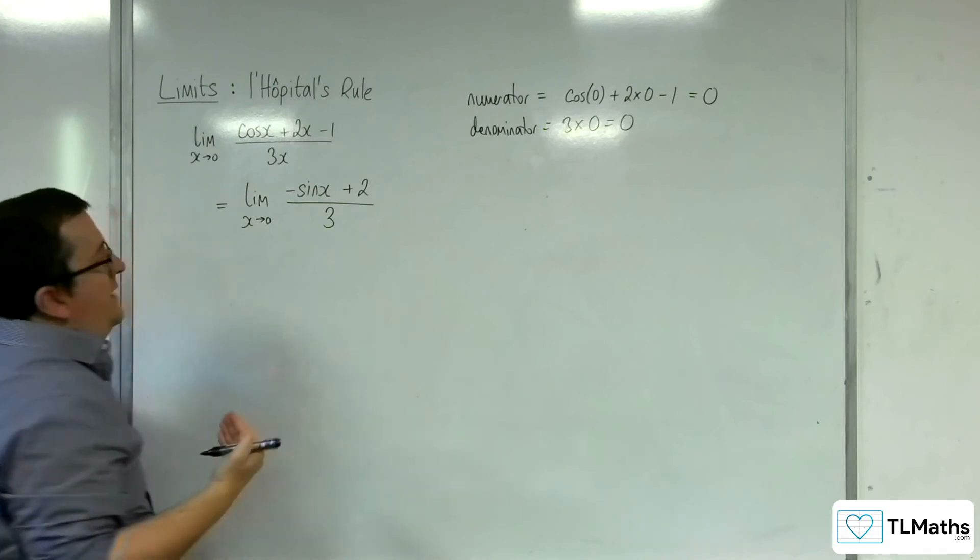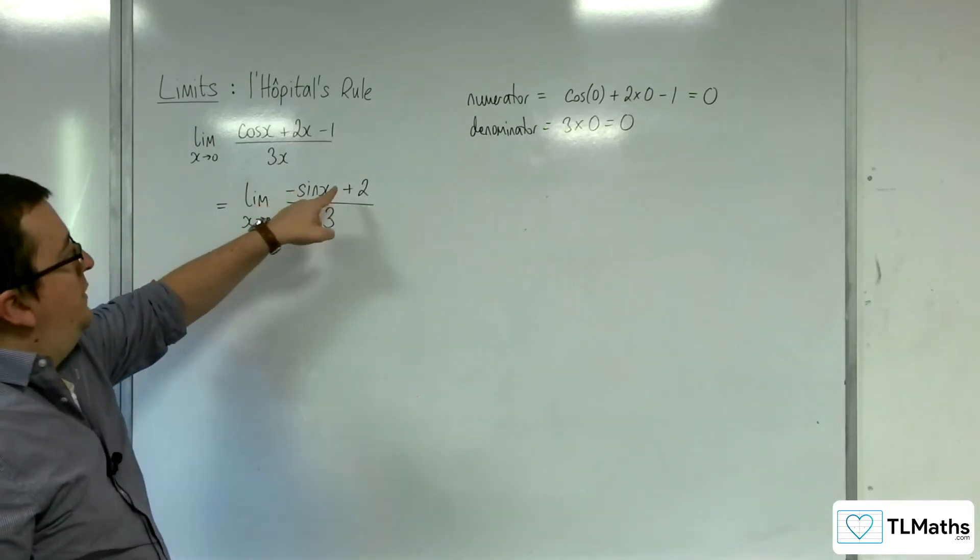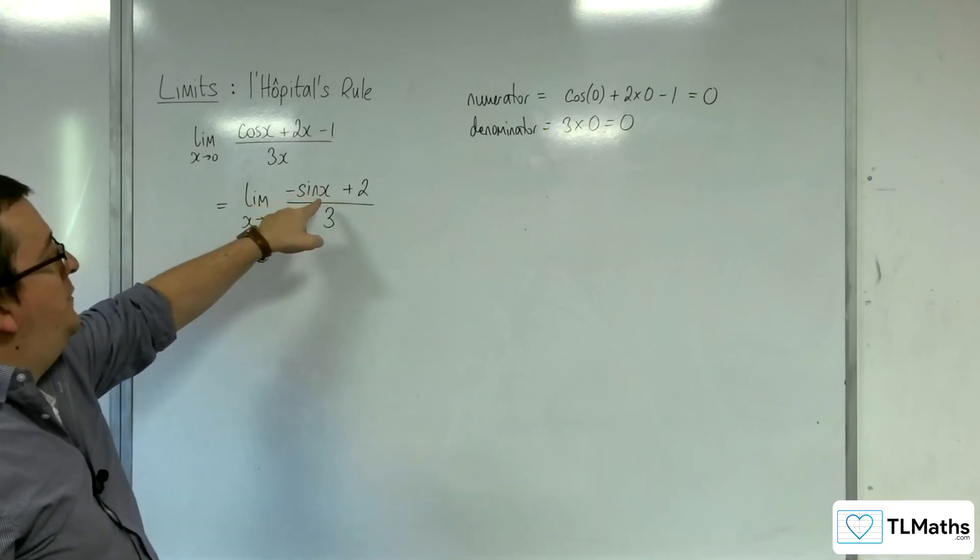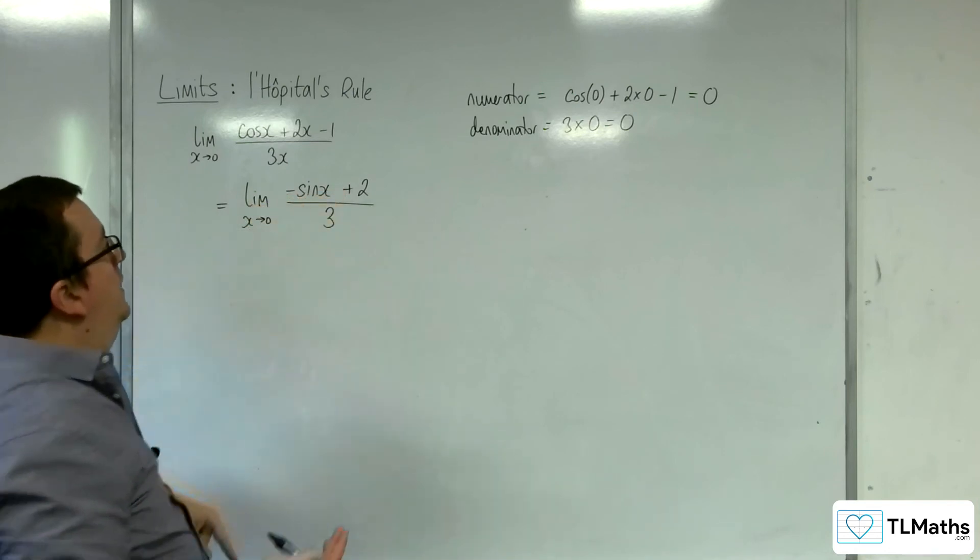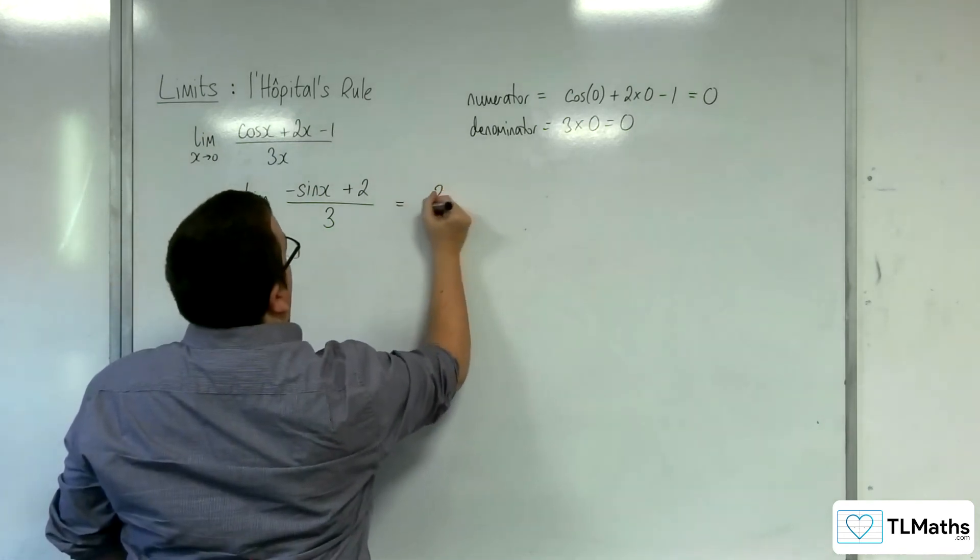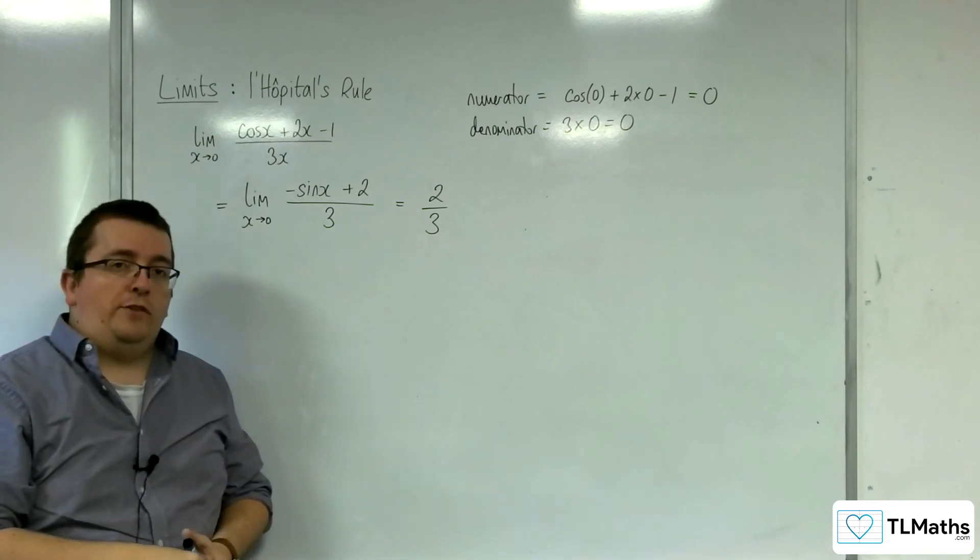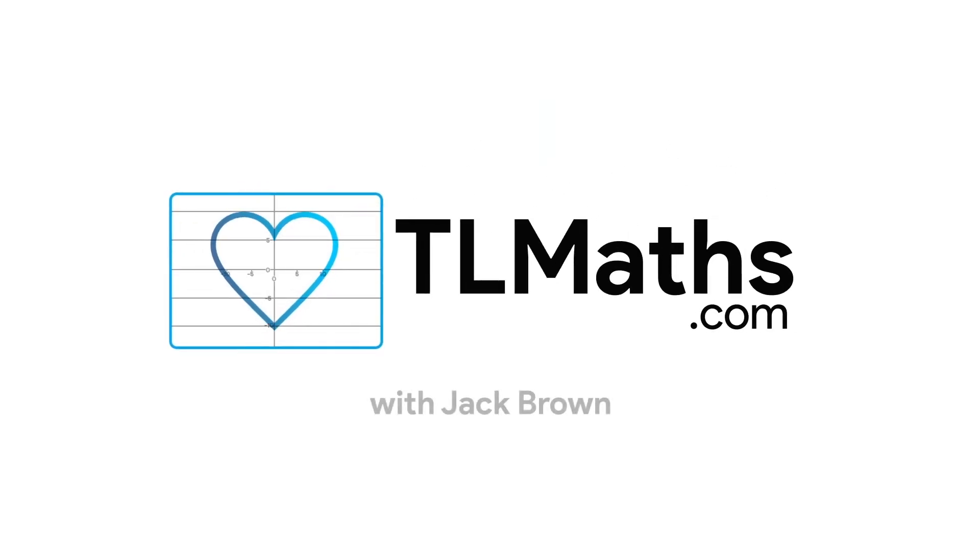So as x tends to 0, the numerator is just going to be minus sine of 0, which is 0, plus 2, and the denominator is going to be just 3. And so the limit of this as x tends to 0 is actually just 2 thirds.